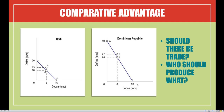First, who has the absolute advantage in coffee and who has it in cocoa? With absolute advantage, all we care about is the absolute value of the number. Haiti can produce a maximum of 20 tons of coffee while the Dominican Republic can produce 40 tons, so the Dominican Republic has the absolute advantage in coffee. In cocoa, the Dominican Republic has 20 tons versus Haiti's 16 tons, so the Dominican Republic again has the absolute advantage. The DR has the absolute advantage in both coffee and cocoa.